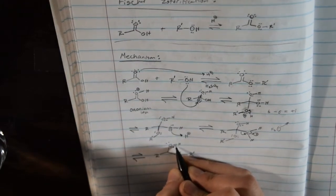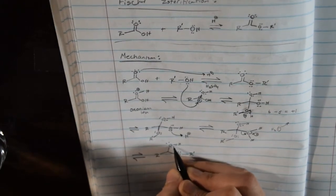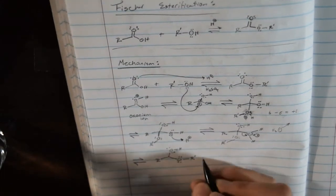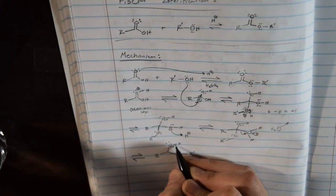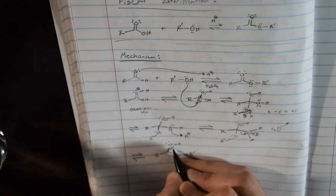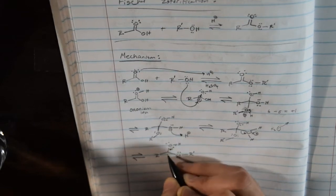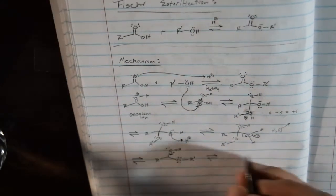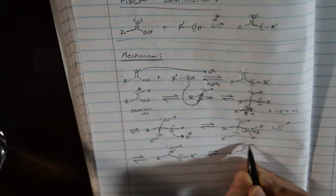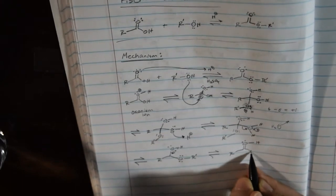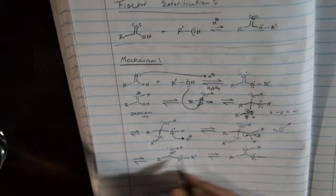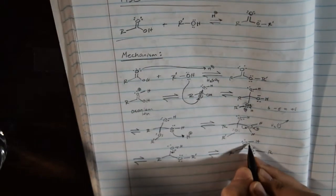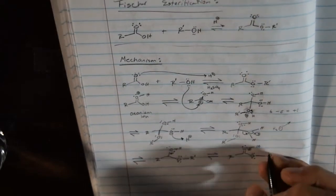After we get this structure, the electrons resonate — you can see the oxygen–oxygen system resonating around. The lone pair electrons here attach onto the bond between the oxygen and carbon, and we make another oxonium ion to form a fairly stable structure. Notice how everything is in equilibrium, because this reaction is in equilibrium.